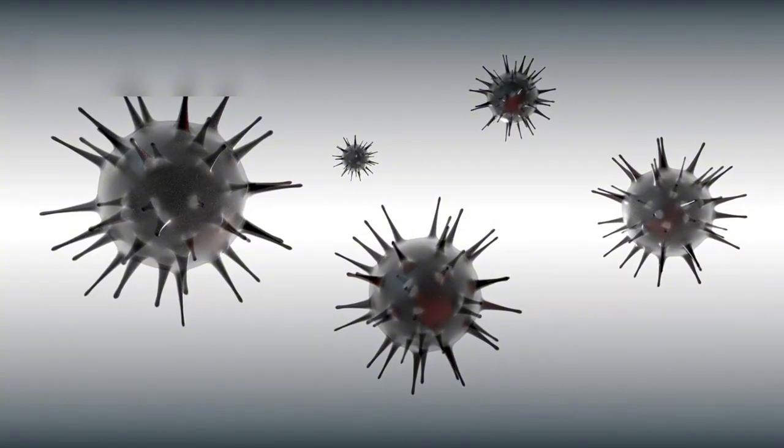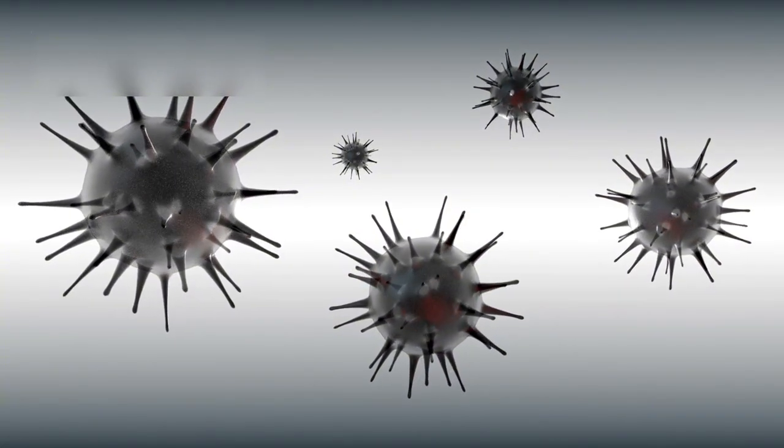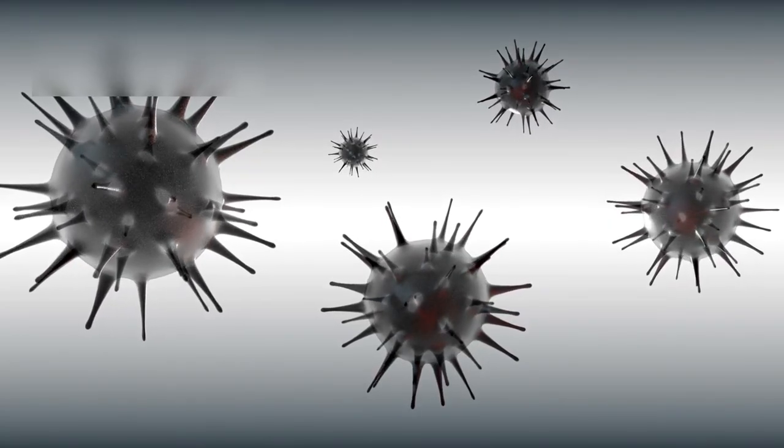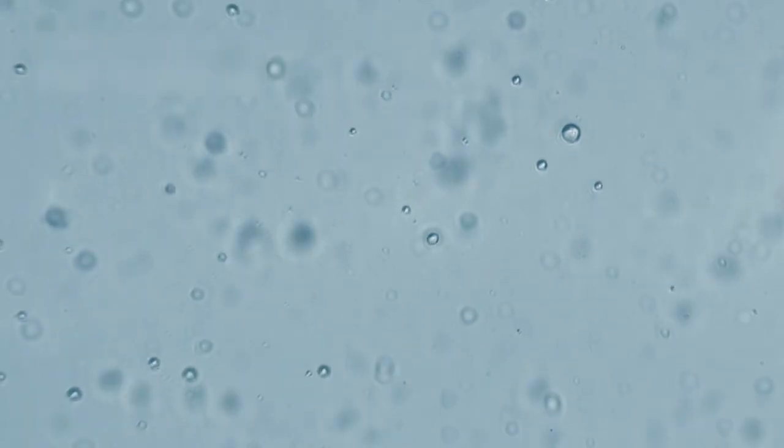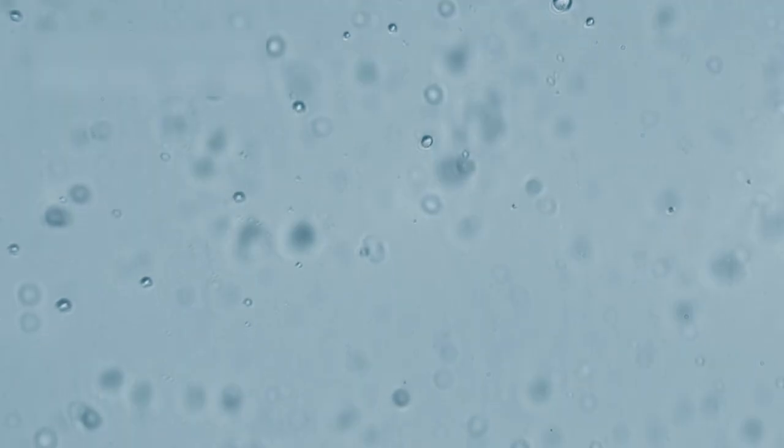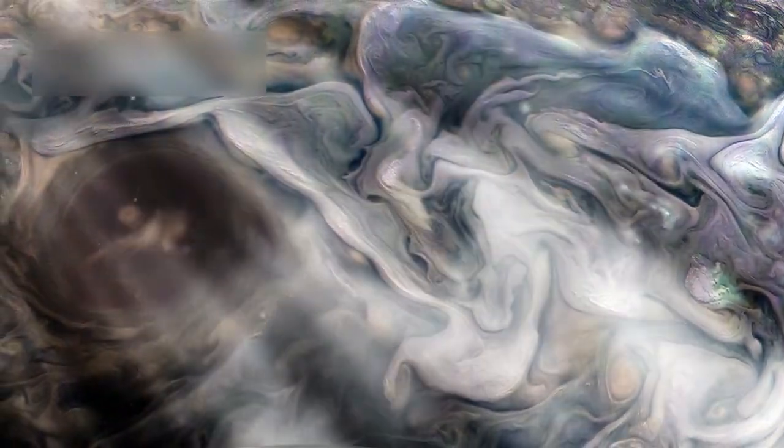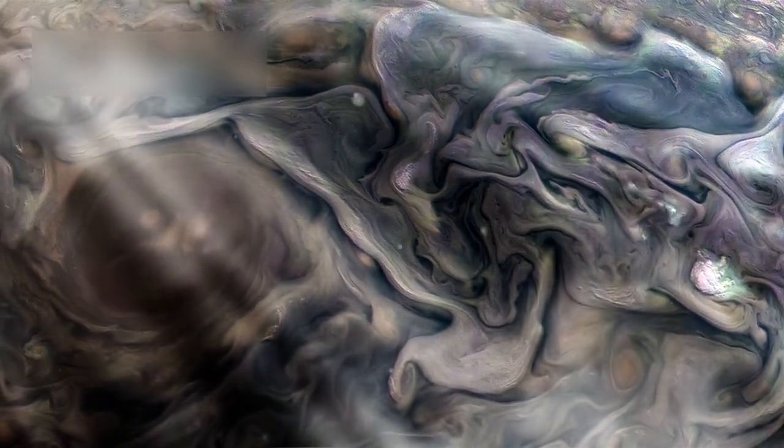If life exists there, it is most likely microbial, floating through warm alien seas under dim red light. These organisms may resemble Earth's ancient plankton, thriving without oxygen and reshaping their planet slowly over billions of years. Such life would not announce itself loudly, but through subtle chemical whispers carried on planetary winds.